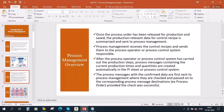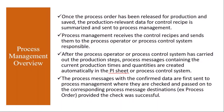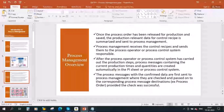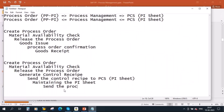After the operators maintain the PI sheet, the system generates process messages. The process messages with the confirmed data are first sent to process management, where they are checked and passed on to the corresponding process message destination — the process order — provided the check was successful. So all those values come back and get updated in the process order. We will now see this entire flow in the system and understand what settings are needed.